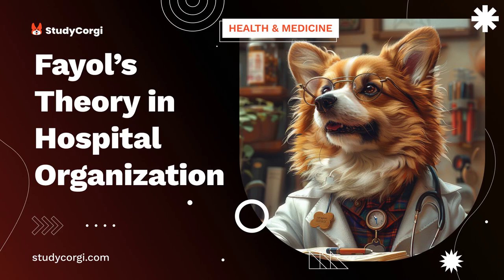External health care delivery includes essential structural characteristics such as the range of services provided and the management structure implemented in the hospital. Through principles such as delivering as one, at the Royal Children's Hospital Melbourne, workers should only work according to a single plan to achieve one goal.